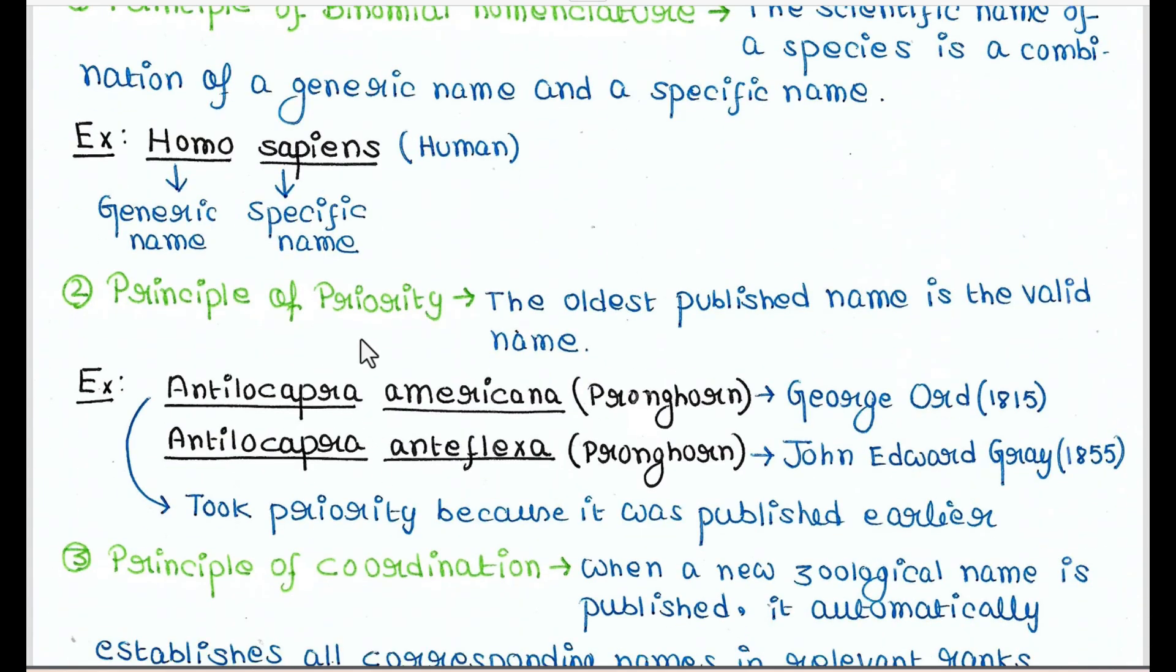Next is principle of priority. So the oldest published name is the valid name. In 1815, George Ord kept the scientific name Antilocapra americana for pronghorn. And in 1855, John Edward Gray kept the name Antilocapra anteflexa for the same species. Pronghorn is an antelope. Now this Antilocapra americana took priority because it was published earlier. This name was published earlier since it was named in 1815. So in this way, it works.